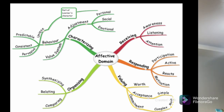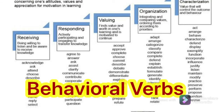The last level is characterization. In characterization, there are two sub-levels: the lower level called generalized set, and the higher level called characterization. Now, let us look at the different categories or levels of the affective domain taxonomy and the different verbs used when formulating an outcome, intended learning outcome, or lesson objective in a lesson plan. You must familiarize yourselves with these different verbs.